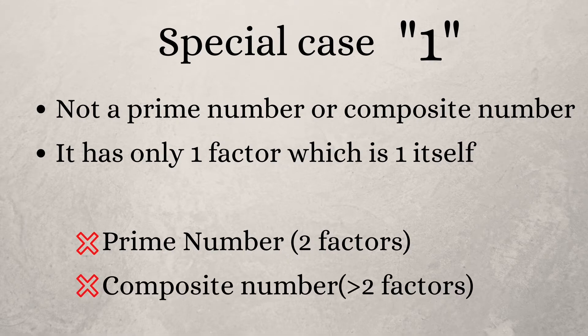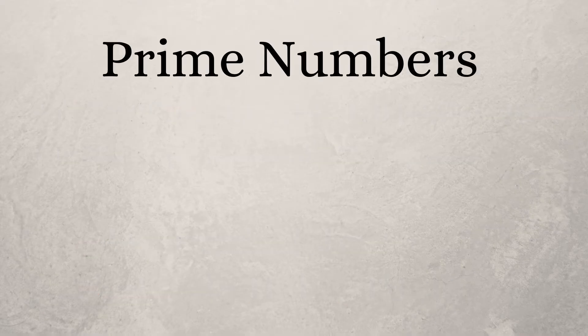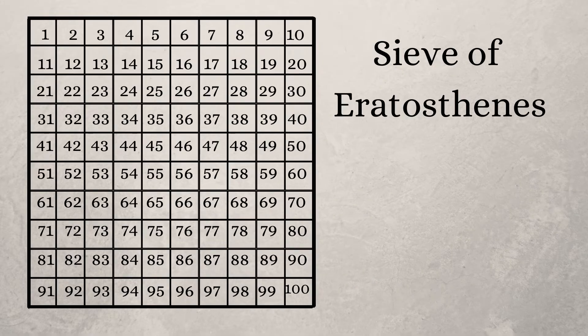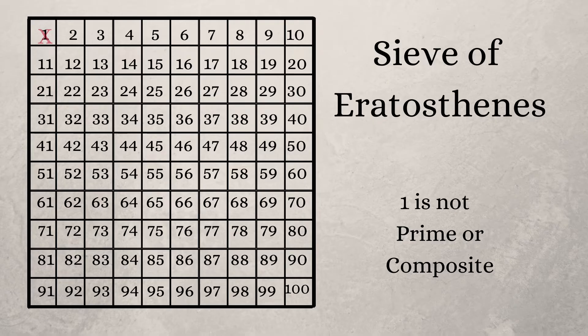Now let's learn how to find out the prime numbers from 1 to 100. There's an old and easy method called the Sieve of Eratosthenes. Before we get started, we know that one is not a prime or composite number, so remove one from the list and start from two.